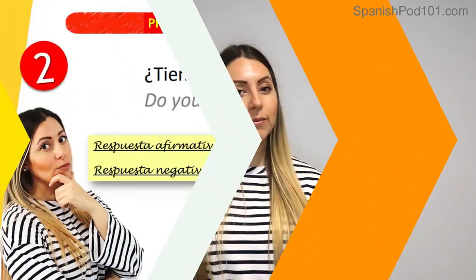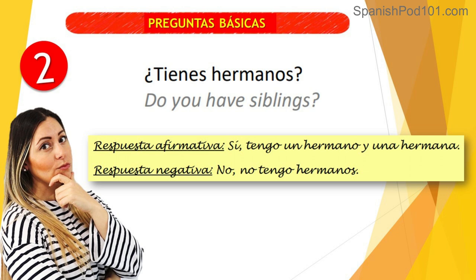Question number two: '¿Tienes hermanos?' — Do you have siblings? Affirmative answer: 'Sí, tengo un hermano y una hermana' — yes, I have a brother and a sister. Negative answer: 'No, no tengo hermanos.' Pay attention — there are two 'no's': the first to answer the question, and the second to negate the verb. 'No, no tengo' — no, I don't.